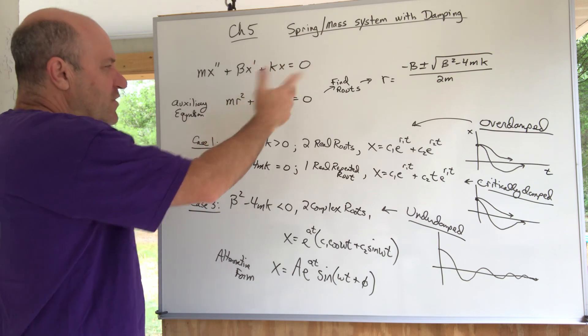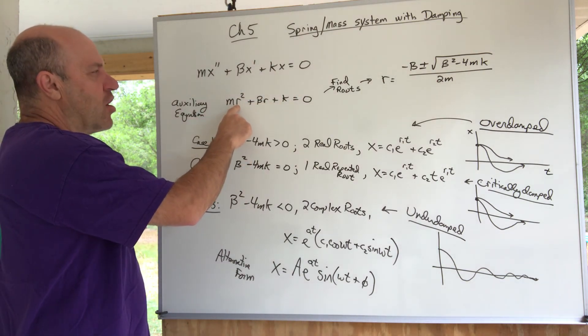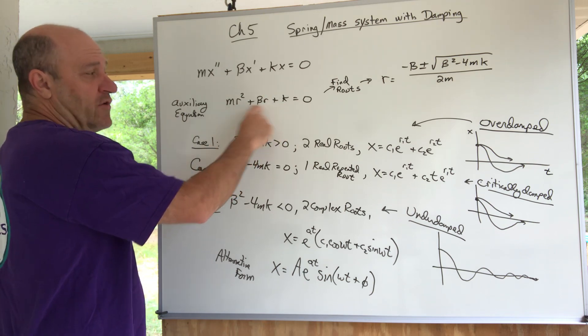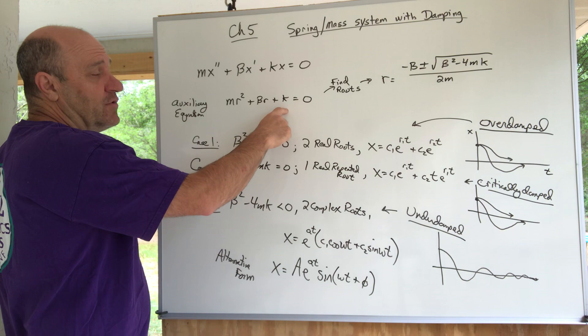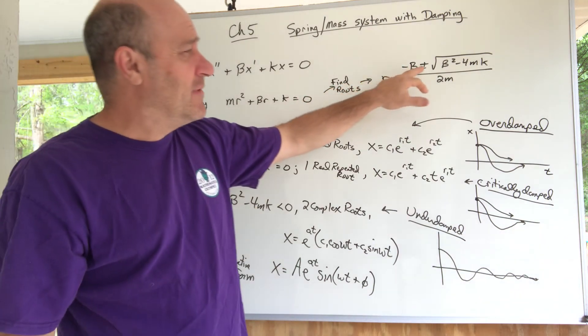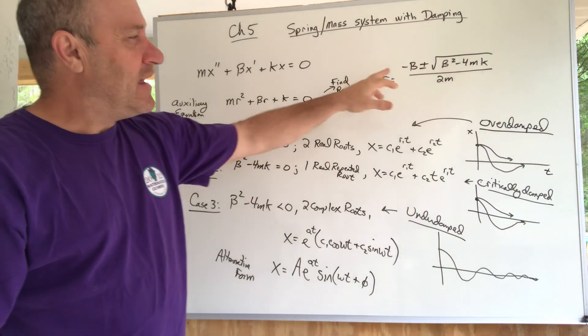If we write the auxiliary equation, I've been using the letter R, so here it is. Then you find the roots of the quadratic equation. You can maybe factor or whatever, but I just did the quadratic formula here with m, beta, and k.